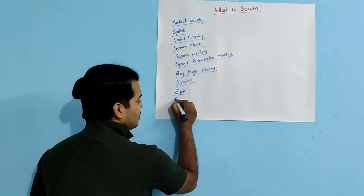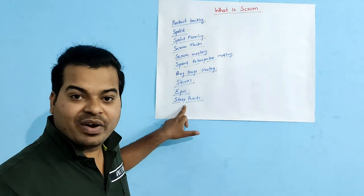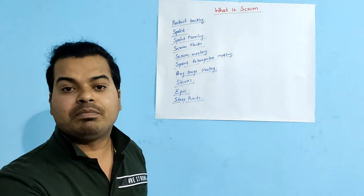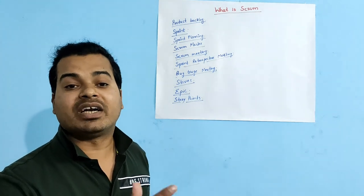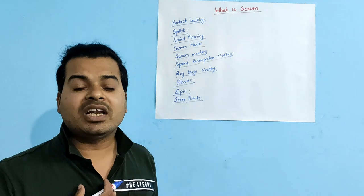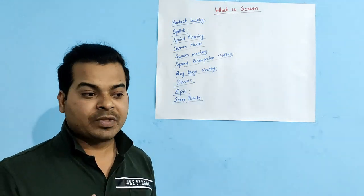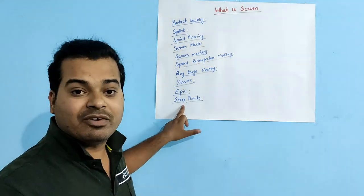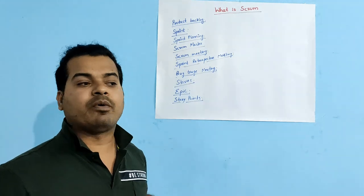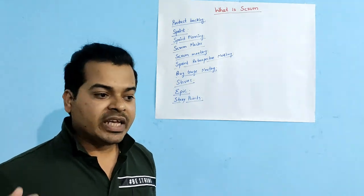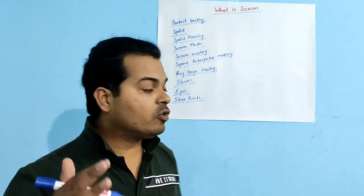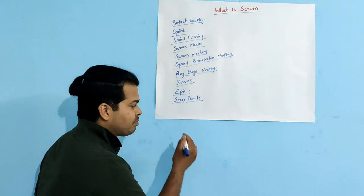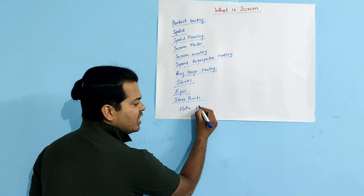The next concept is Story Points. A Story Point is a rough approximation given by developers and test engineers of the effort required to complete a particular task. When the Scrum Master assigns a task, they ask what the Story Point is for that task. The team members respond with a number, such as two or three. Each company has its own standard — for example, some companies define one Story Point as equal to one hour.